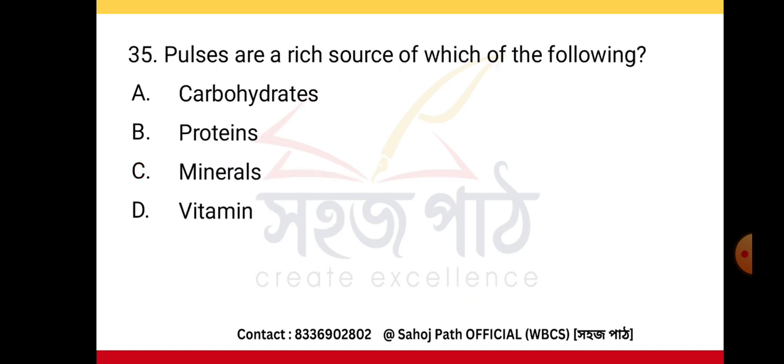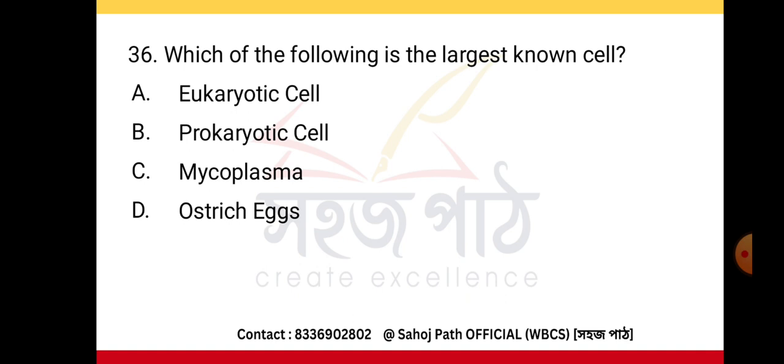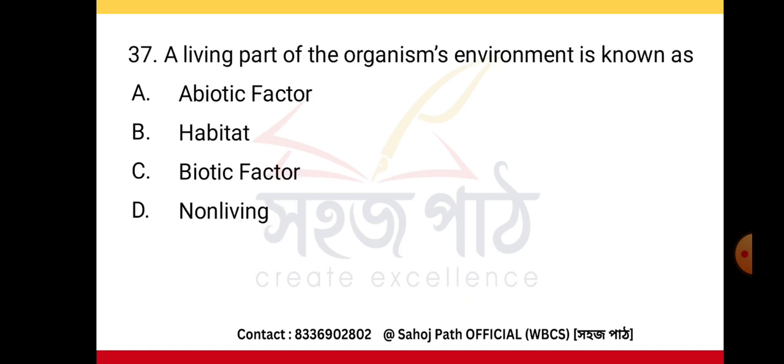Mendel is known as the father of genetics. Pulses are a rich source of proteins. Which of the following is the largest known cell? Ostrich eggs. A living part of an organism's environment is known as a biotic factor.